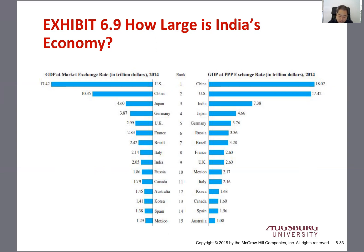That's basically the 15 biggest countries. Now if you use the PPP exchange rate — where you include purchasing power to measure the exchange rate and recalculate GDP — then China becomes number one, because the Chinese price level is lower. It actually measures on a real purchasing power basis. The United States is second.